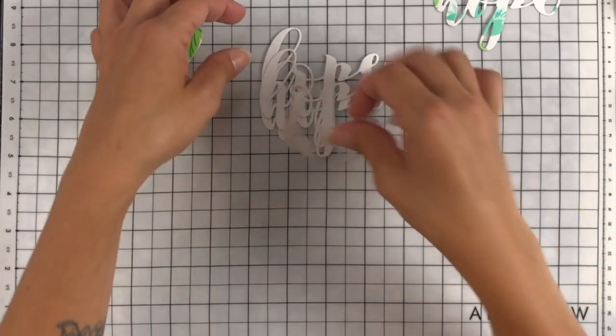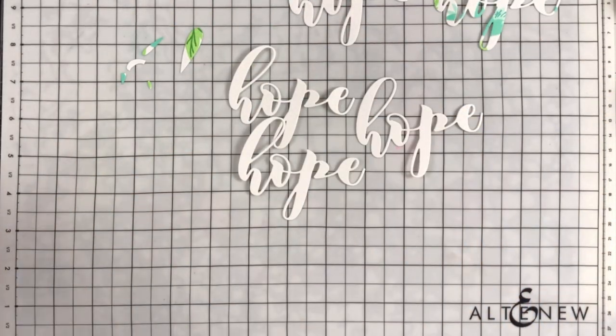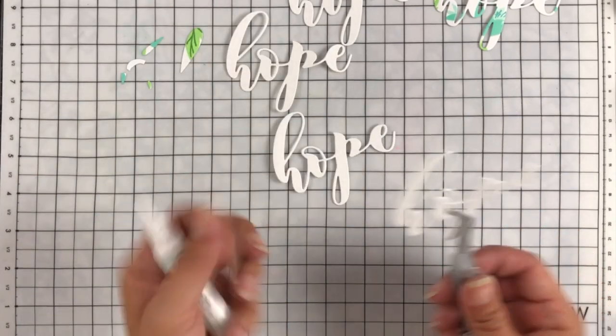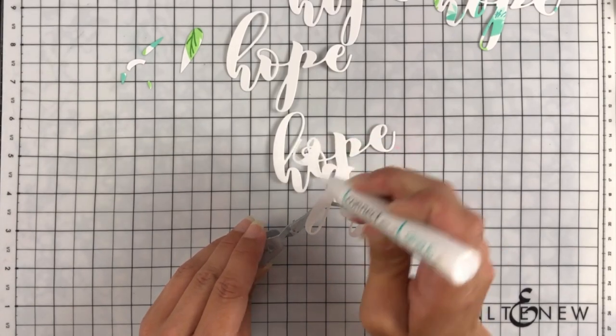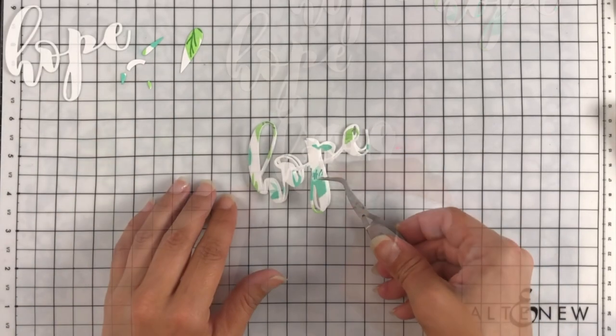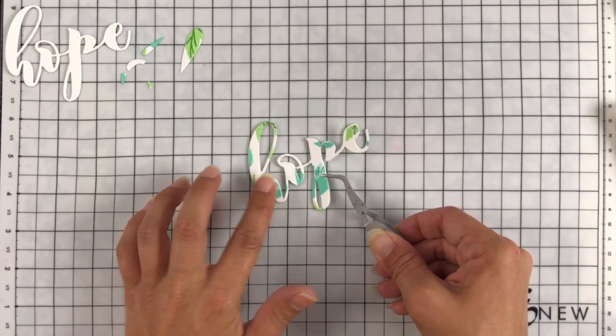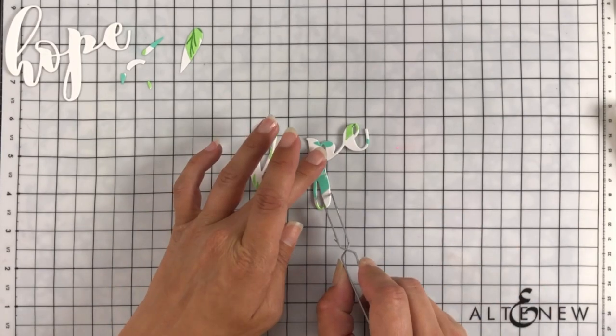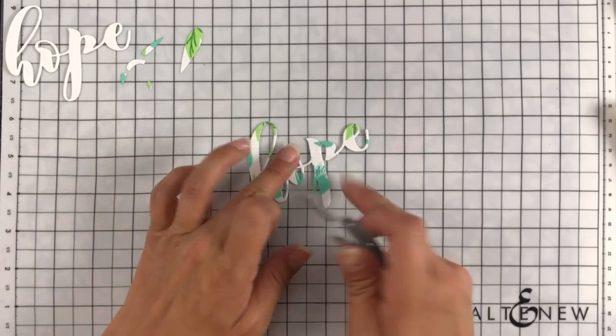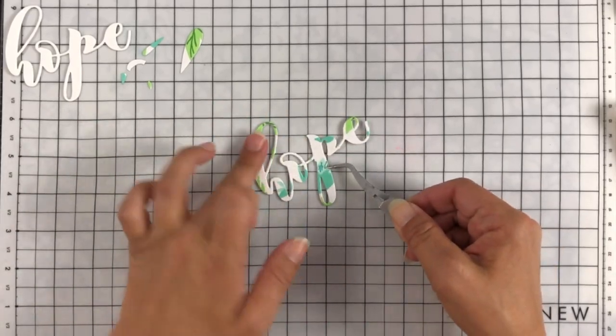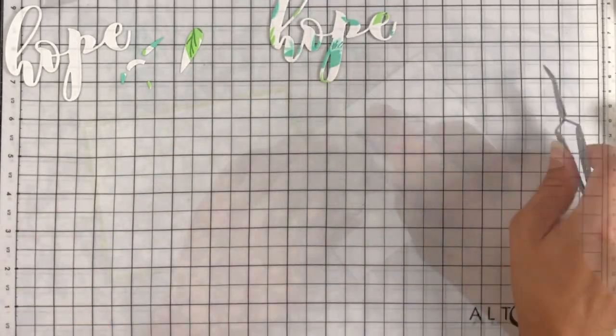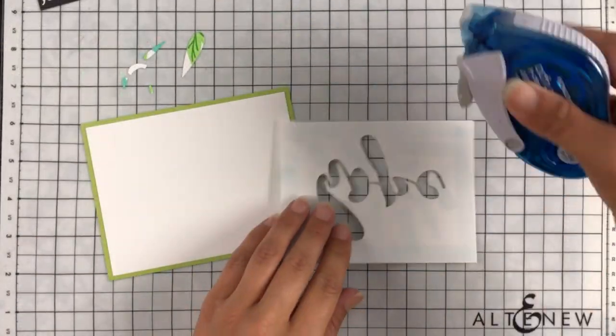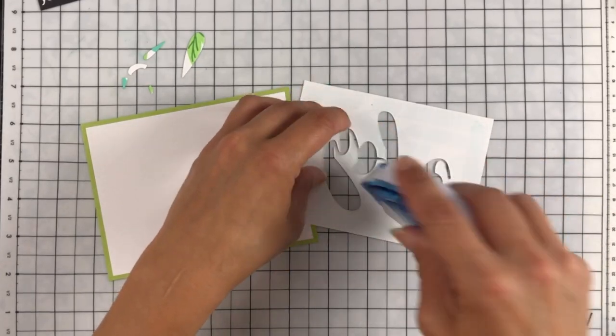I'm taking that hope die and I'm actually going to die cut it. You're seeing four but I do run it through five times and I'm going to layer them up for dimension to use on my two cards. I do find this is really easy to layer them together with just some liquid glue and some tweezers. The hope with the pattern on it I did layer two white pieces behind it and then for my other card where I'm using the negative space of it. Sorry I never remember which way to call it.